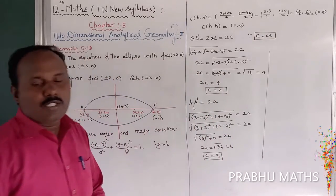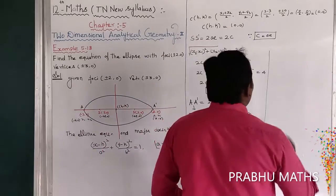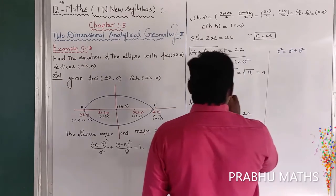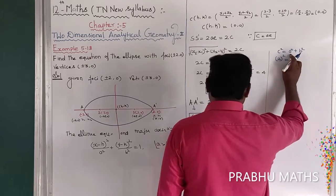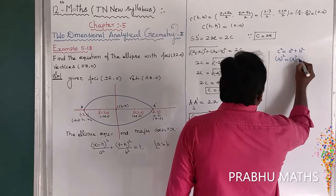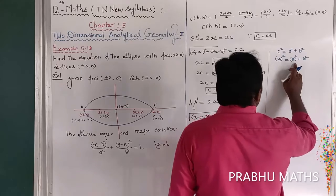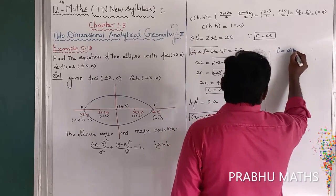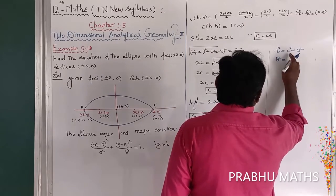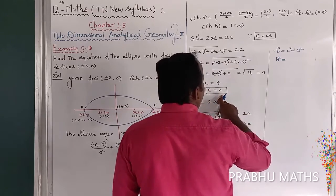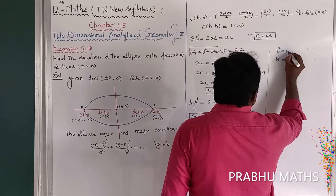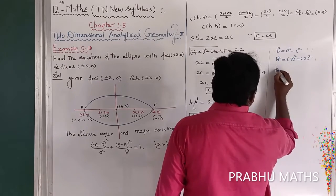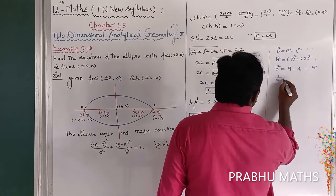Now find b². We know that c² = a² − b², so b² = a² − c². Substituting a = 3 and c = 2: b² = 3² − 2² = 9 − 4 = 5. Therefore b² = 5.